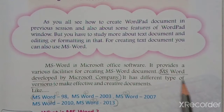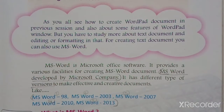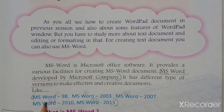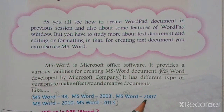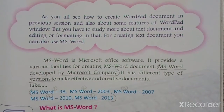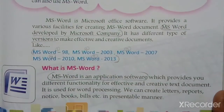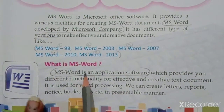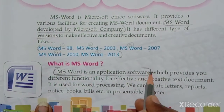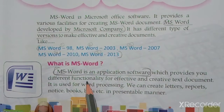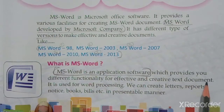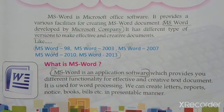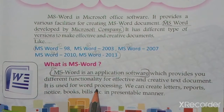MS Word was developed by Microsoft company and it has different types of versions, such as MS Word 98, MS Word 2003, MS Word 2007, MS Word 2010, and MS Word 2013, which help make documents effective and creative. MS Word is an application software which provides different functionalities for creating effective and creative text documents.